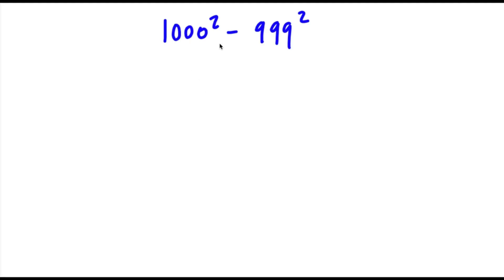Alright, so we have 1000 squared minus 999 squared. And I actually have two methods to solving this problem.